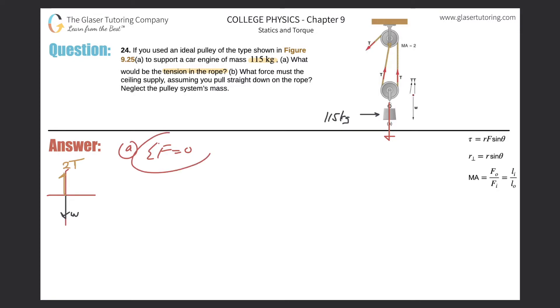Putting these vectors into my formula here, I would have now 2T minus W is equal to zero. 2T is then equal to W, T is then equal to W over 2.